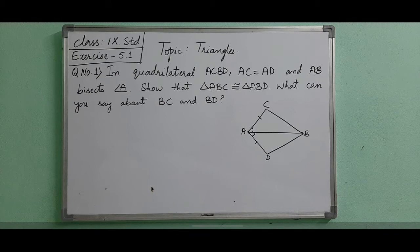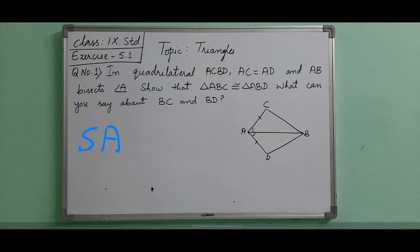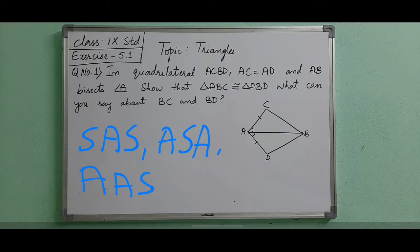Hello everyone. In the introduction video of triangles, we had seen the criteria for congruency of triangles — the five criteria: SAS criteria, ASA criteria, AAS criteria, SSS criteria, and the RHS criteria. Based on these congruency rules, we are now going to start with Exercise 5.1.